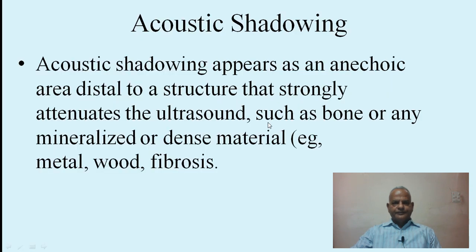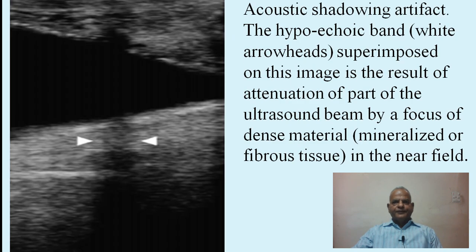Acoustic shadowing appears as an anechoic area distal to a structure that strongly attenuates the ultrasound, such as bone, mineralized or dense material, metal, wood, or fibrotic tissue. The acoustic shadowing artifact shown here — the hypoechoic band indicated by white arrowheads — is the result of attenuation of part of the ultrasound beam by a focus of dense, mineralized, or fibrous tissue in the near field.